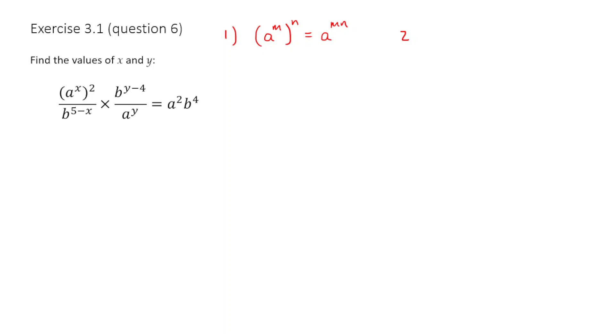And the second rule is the division rule. If I've got a to the power of m, and I divide it by a to the power of n, then I must get a to the power of m minus n.